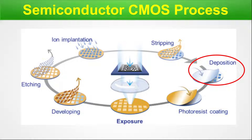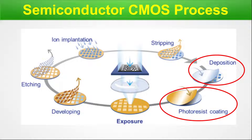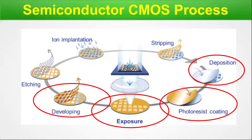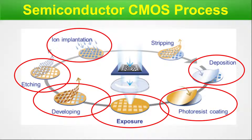We do the deposition. Then we do the photoresistive coating. Then we use a mask and expose this photoresist to the mask layout, and accordingly an imprint happens on the photoresist coating. Then we develop it, and then we etch it. Then we do the needful ion implantation. Finally, we will be stripping out the remaining photoresist.